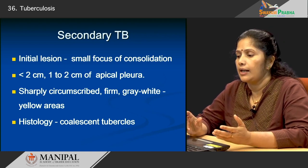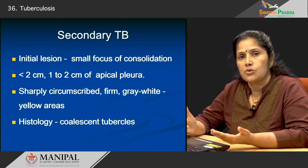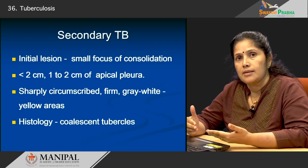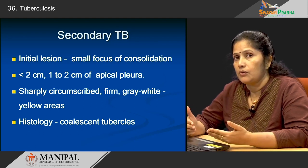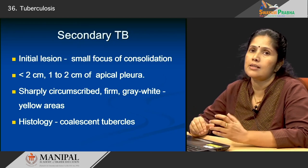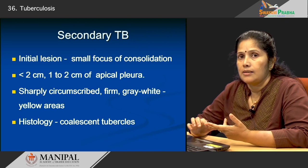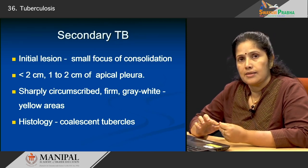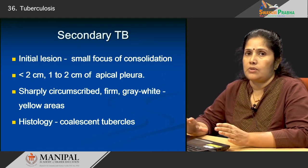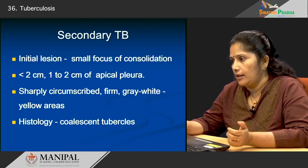A granuloma is also known as a tubercle. It contains the special cells — the epithelioid histiocytes, the giant cells, the lymphocytes, the plasma cells, and the central caseous necrosis. That is the hallmark of the histologic finding.